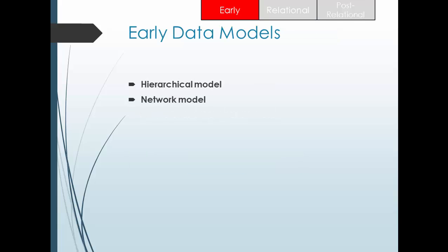In the early data model, there are three types. I have highlighted two: the hierarchical model and the network model. We also have the file data model. The file data model is like a window file system — we maintain everything as a file. Its design is very unstructured; the same data might be contained in multiple files with no relationship between them, causing duplicate data. To overcome this, the hierarchical model was designed.